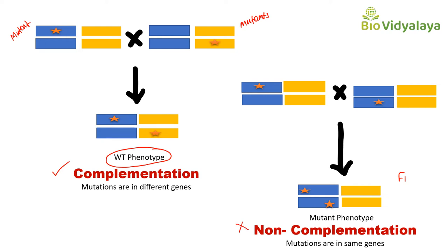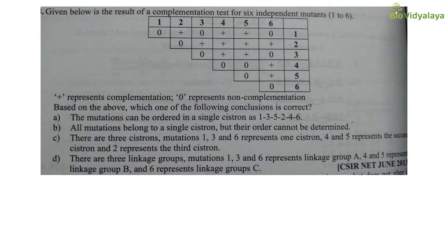Now let's see one question from CSIR Net June 2013. The question is: given below is the result of a complementation test for six independent mutations, 1 to 6. Plus represents complementation and 0 represents non-complementation. Based on the above, which one of the following conclusions is correct?